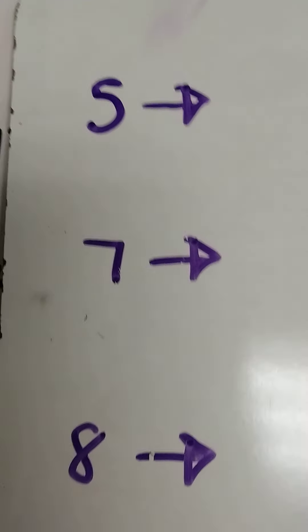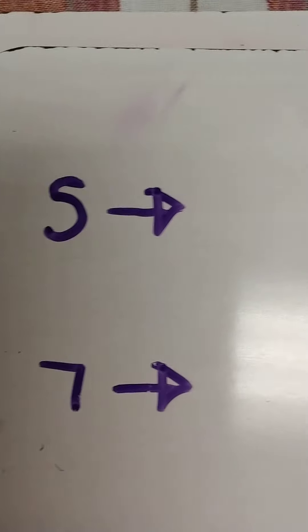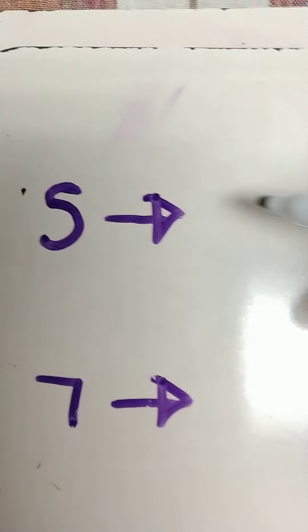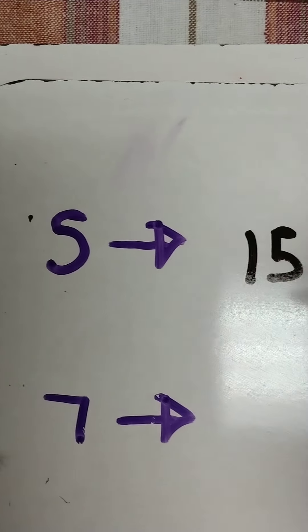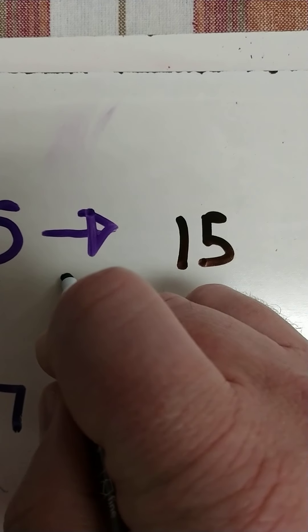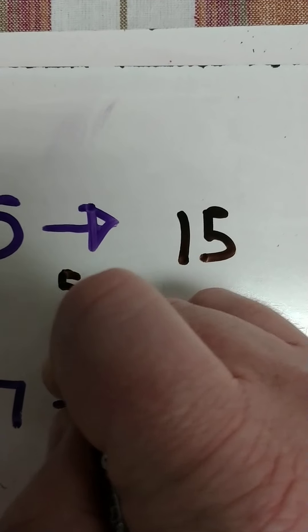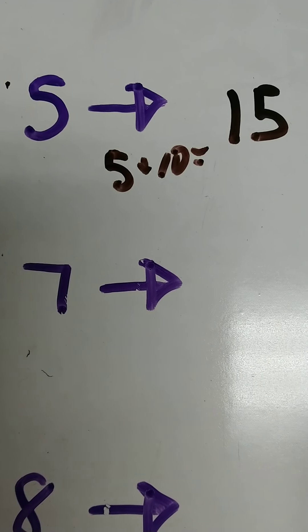Coming over here, we're going to add 10. So 15, add 10, it's like adding just one more in the tens column. So it's quick math. You have a 5 in the ones column, and then you add 10 more to the 1 in the tens column. So it's like 5 plus 10 equals 15. And then we have 7.